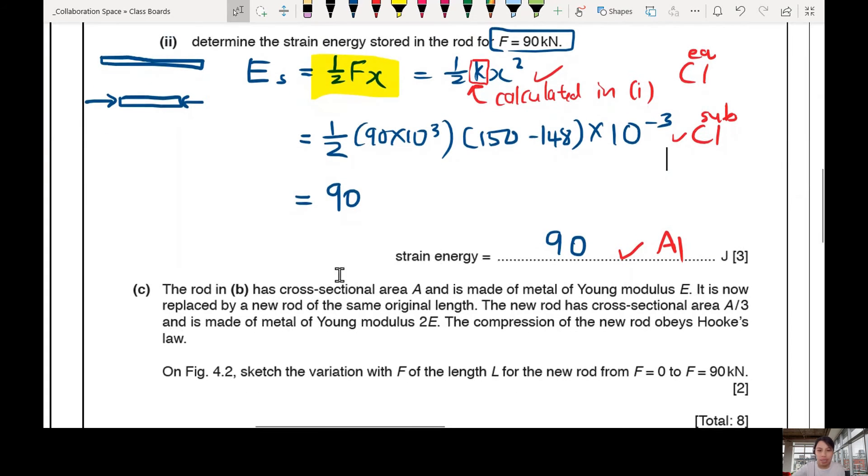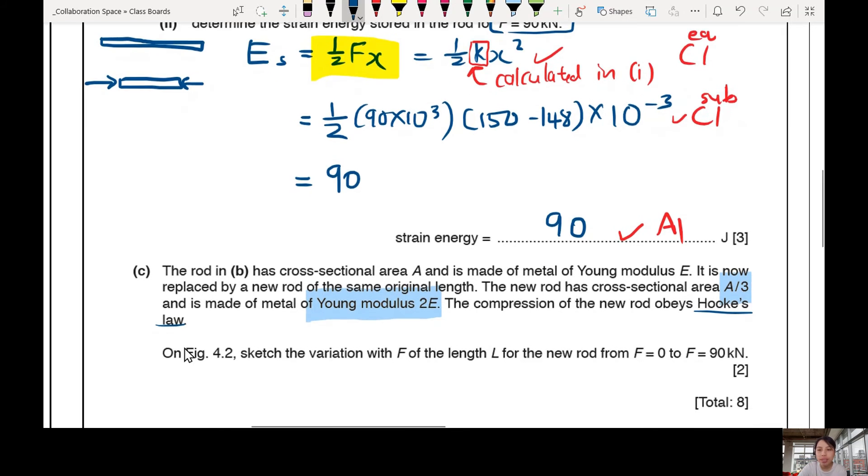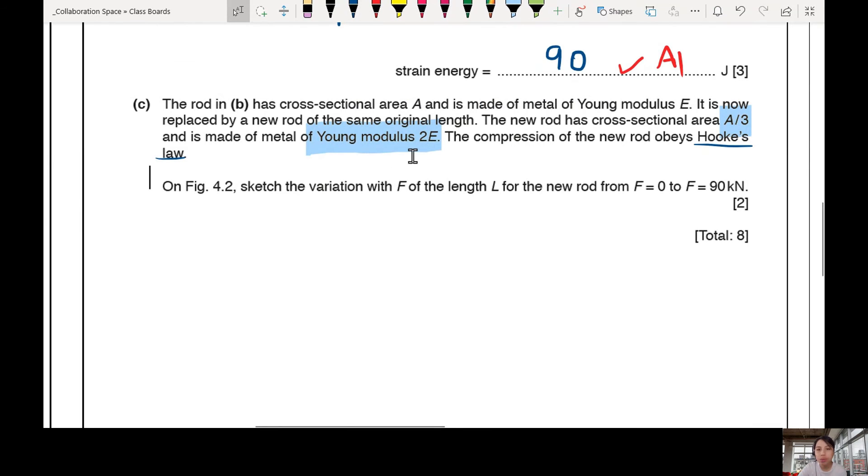So your rod that we use has cross section area A, Young modulus E. I guess we could draw it again, but never mind. But then there's a new rod that has the same original length. And this new rod, what is different is the cross section area now is smaller. And the Young modulus is bigger. Stronger but thinner. So the compression of this new rod obeys Hooke's law. Obeys Hooke's law means we can know that it's going to be a straight line, F equals KX.